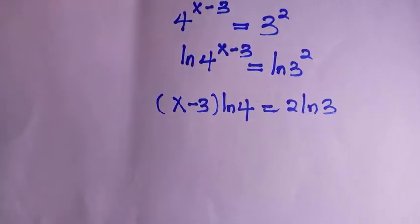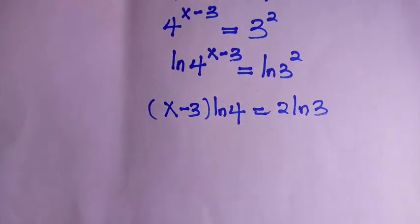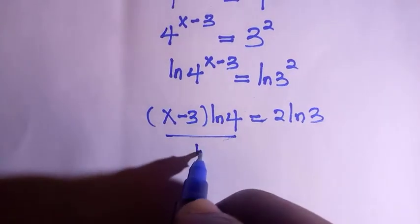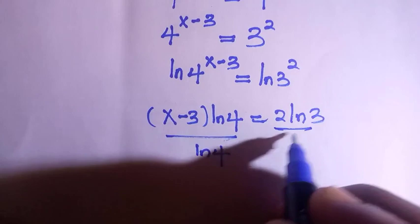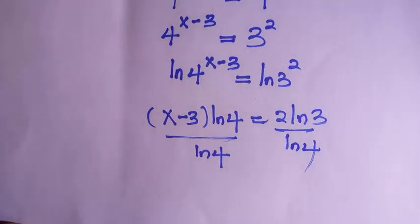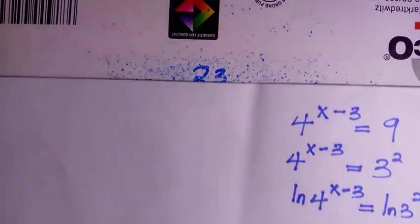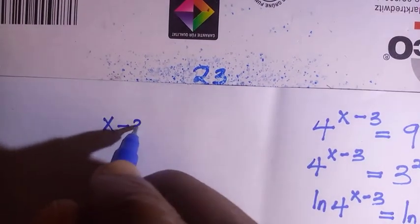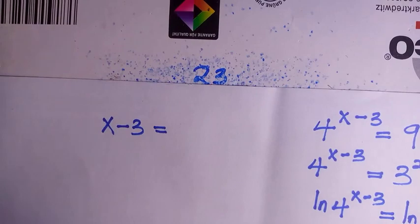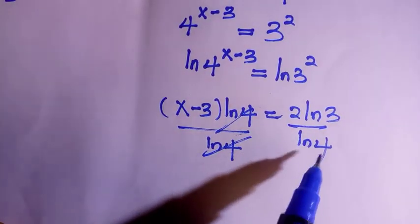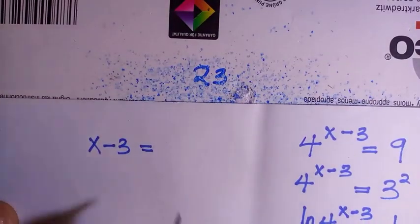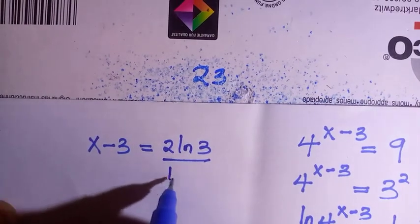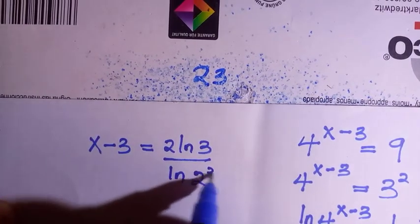And if I divide both sides by ln 4, or you can open the bracket straight, but let's divide to shorten this. Here we have dividing ln 4 to both sides. So these two will cancel, and then we have x minus 3 equals to 2 ln 3 divided by ln of 2 to the power of 2.